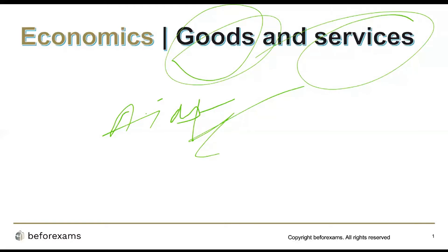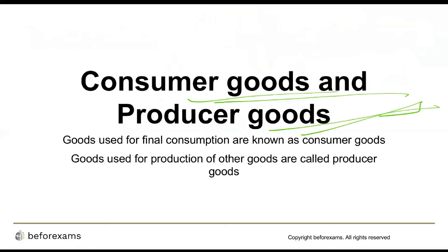Goods are also of certain types. The prominent types are consumer goods and producer goods. Goods that are used for final consumption are known as consumer goods — like food, house, and car. These are goods where we are the final consumers using them.